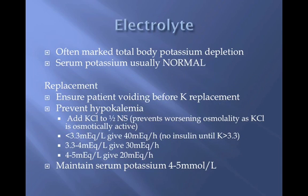It's important to correct electrolyte derangements early, and potassium is the most important one to check. Often there is a marked total body potassium depletion, but serum potassium is usually normal. Ensure that the patient is voiding before potassium replacement. Supplement potassium to half-normal saline, as potassium chloride is osmolally active. Maintain serum potassium levels between 4 and 5 mEq/L.